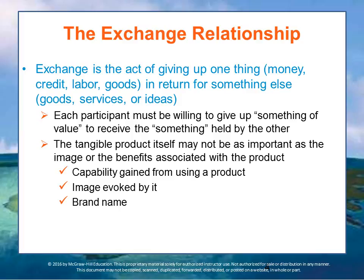Therefore, the tangible product itself may not be as important as the image or the benefits associated with the product. This intangible something of value — called the value proposition — may be a capability gained from using a product or from the image evoked by the product, something like a brand name. Having that additional value is what people want because they perceive that their life will be better, something will be easier, or they will be happier because of that.